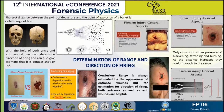Starting with the definition of range: the distance between the point of departure and point of explosion of a bullet is the range of fire. Basically, there are four ranges of shooting — contact range, close shot, near shot, and distant shot.